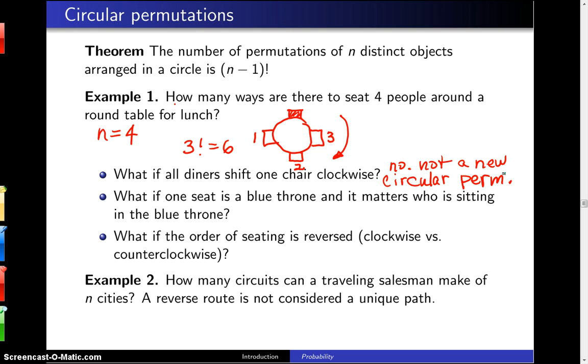Second question, what if one of those seats is special? For example, if it's a blue throne and it matters who's sitting in the blue throne. Well now, all of a sudden, we can put a four up here because it matters who, it's not arbitrary anymore, it matters who we put there because that's a special seat. The answer in this case would be four factorial, which is 24. There's 24 different ways in that case.